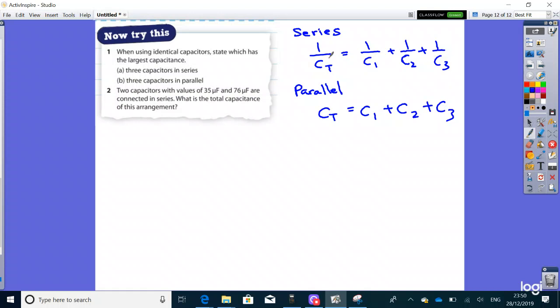The question is which one will give you the largest capacitance. Let's assume, as indicated in the question, they are all identical capacitors with the same capacitance. We can start with solving the series: 1/CT = 1/C + 1/C + 1/C. Since they all have the same denominators, 1/CT = 3/C.